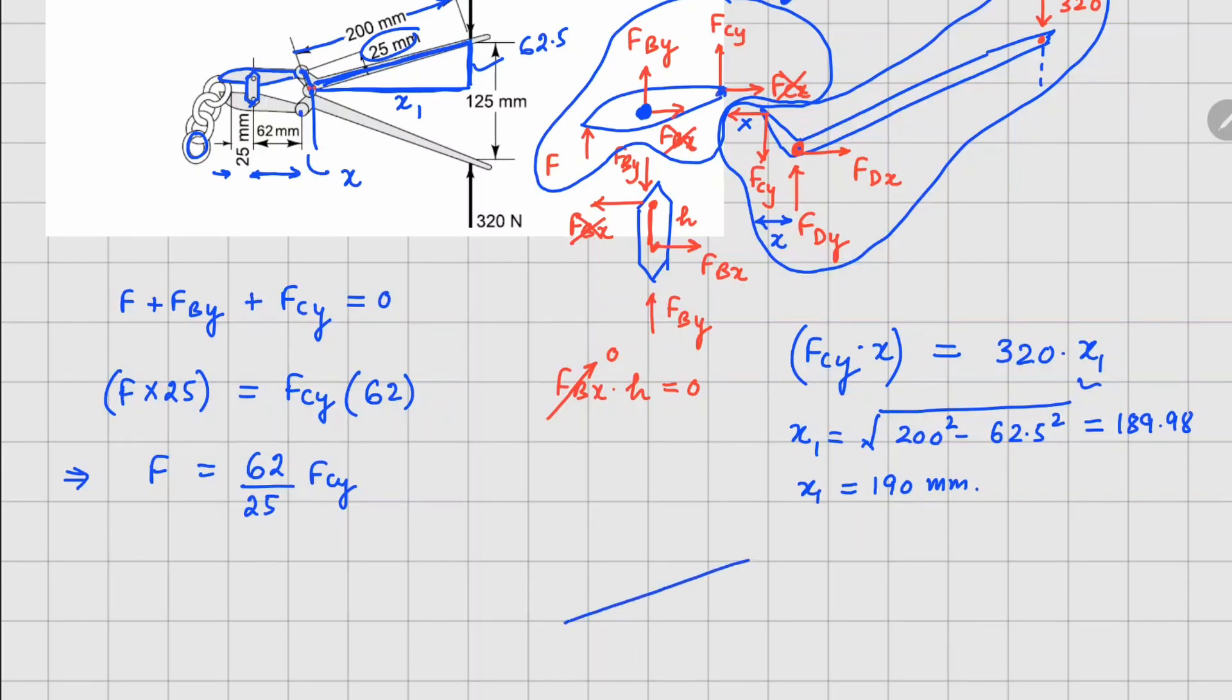Now to calculate x we can look at the handle part again. On the handle part this distance is 62.5, this one is 200, and this part that was attached on this side, it's given that this distance is 25. So I can complete this triangle, and if I mark this angle as theta, this internal angle here, this angle is also theta, and this distance is 25.